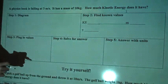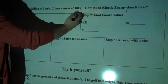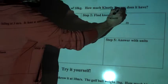Alright, so this first question we're going to go over is a physics book is falling at 3 meters per second. It has a mass of 10 kilograms, and the question is how much kinetic energy does it have?